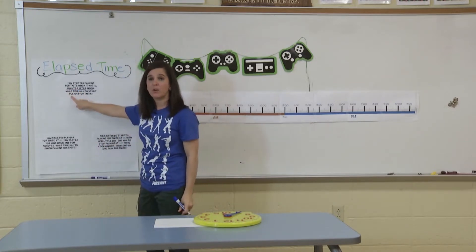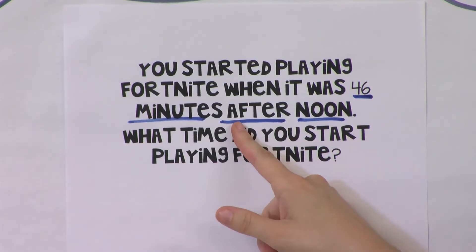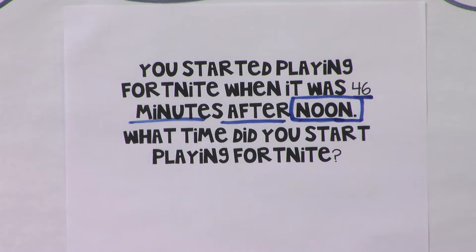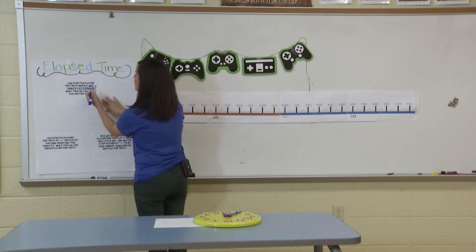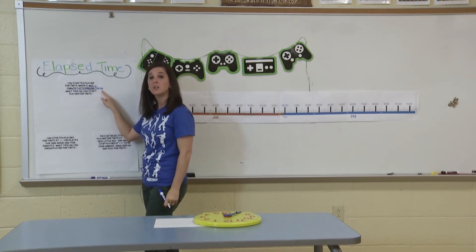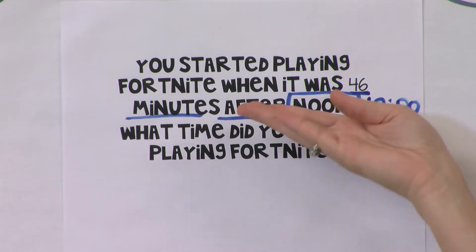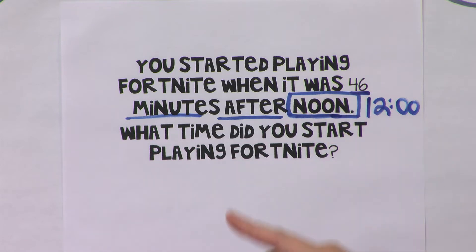Minutes are important because we have to know — are we talking about hours or minutes? We need to know it says after, not before. We also have to know what noon means. If you're thinking 12 o'clock in the middle of the day, you are exactly right. You might want to write that noon is 12 o'clock. So we want to find out what time we started playing. We know that noon is 12 and we started playing 46 minutes after noon. What would 46 minutes be after 12?